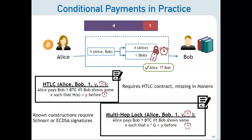The problem is that we don't have a scripting language in Monero, so we would need to add this at the scripting or consensus layer. Another approach used in practice is called multi-hop lock, another way of implementing conditional payments where Alice pays Bob one Bitcoin if Bob shows some value X such that X times G equals Y — the condition. You can think of it intuitively as Bob getting the money if he is able to produce the private key for a public key. This goes more in line with the signature scheme in Monero. However, the linkable ring signature in Monero today is neither ECDSA nor Schnorr, so the question is: can we adapt these conditional payments to the signature scheme that Monero has today?